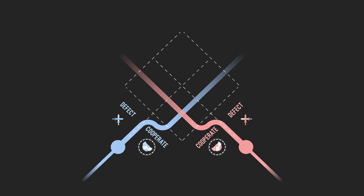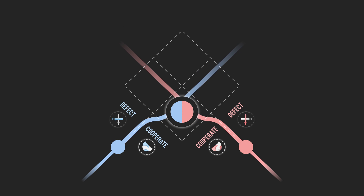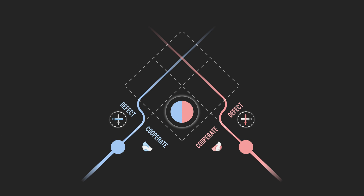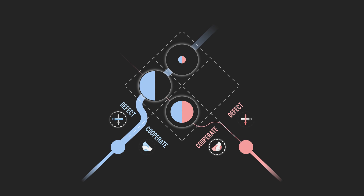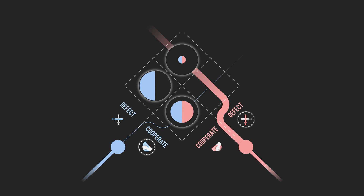The first scenario is mutual cooperation, where the two agents achieve a high payout because they manage to help each other out. The opposite scenario is mutual defection, where their payouts are significantly reduced because of their destructive behavior. Then we have a scenario where blue defects and red cooperates, in which case blue gets all the payout. And the opposite scenario, where red defects and blue cooperates, in which case red gets all the payout.